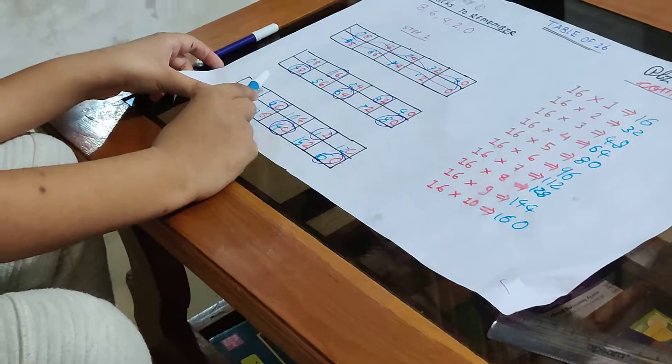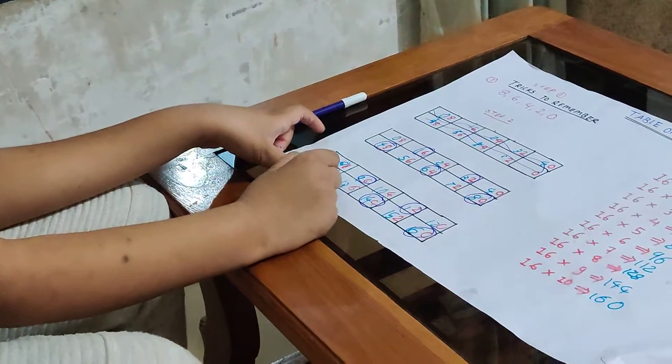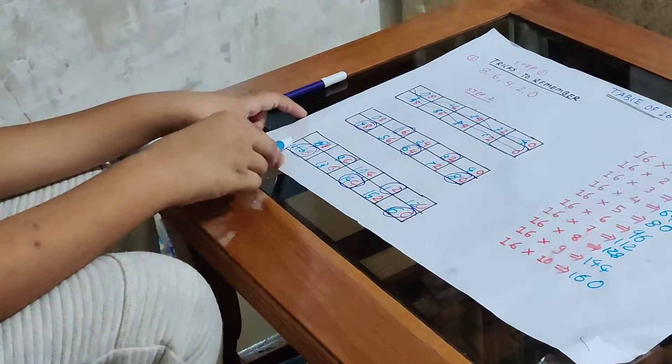Then if you want to, then repeat the 8 and 4 and 12 to get the 16 table.